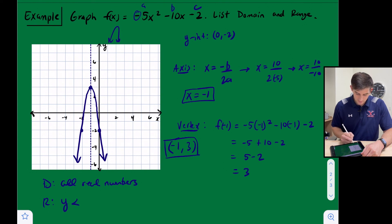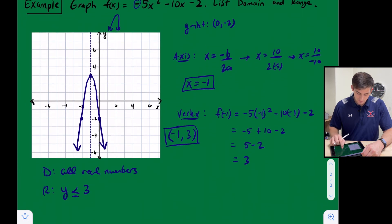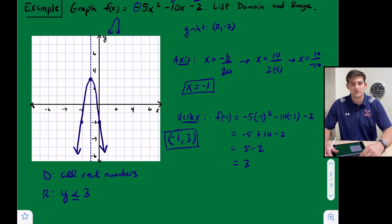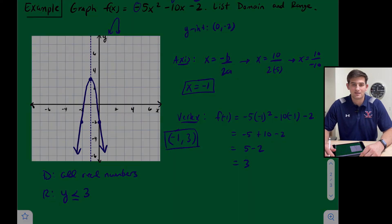And our range now this time is going to be y is less than or equal to 3. So less than or equal to, because we're going down and the highest point is 3. So that's how you graph a quadratic that's in standard form, ax squared plus bx plus c.